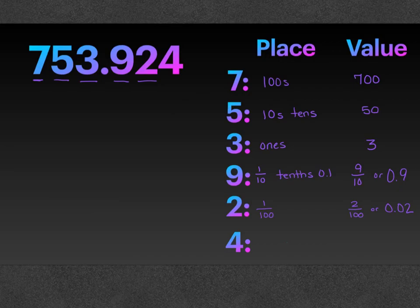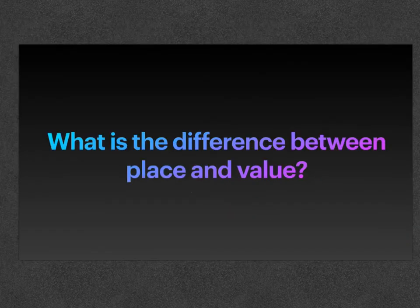And the four is in the thousandths place, so it has a value of four thousandths. In this video, we have learned the difference between place and value.